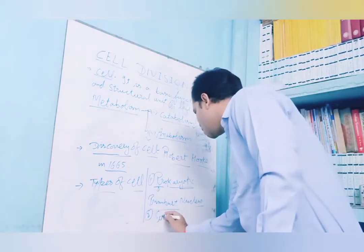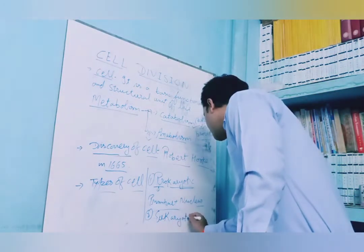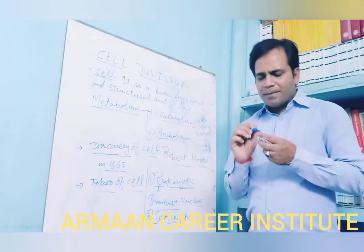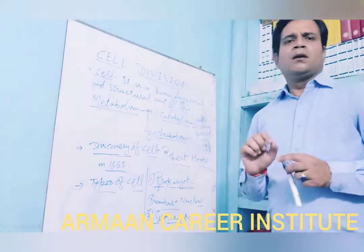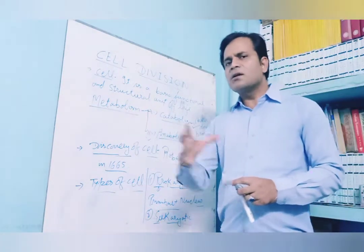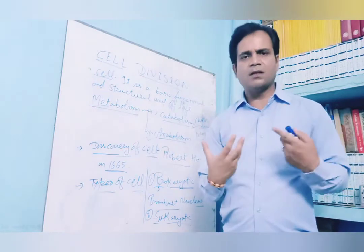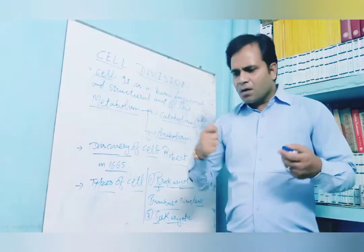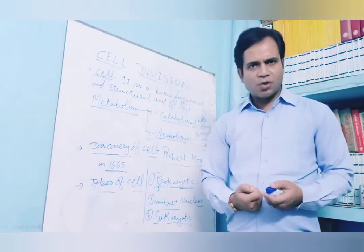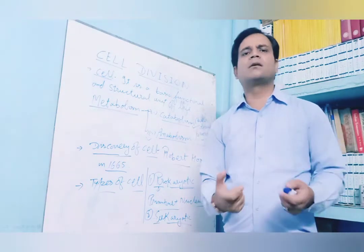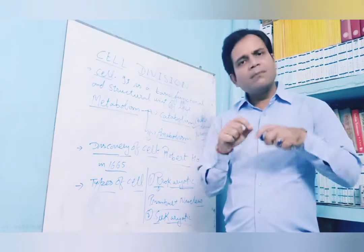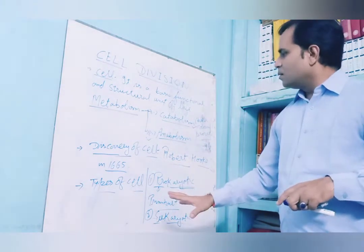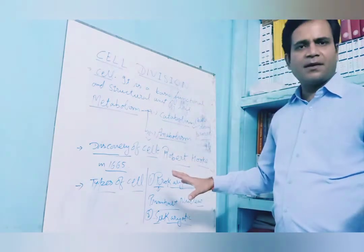The second type is eukaryotic. 'Eu' means true and 'karyon' means nucleus. All multicellular organisms are eukaryotic. For example, human beings are eukaryotic because they have membrane-bound organelles such as mitochondria, nucleus, and Golgi bodies.